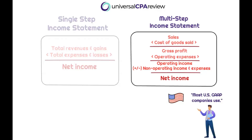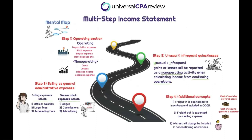The multi-step income statement is a little bit more robust and more broken out — there's more detail that financial statement readers want to know and see. If you're studying for the CPA exam, you might think revenues minus expenses is easy enough, and you're not wrong, but there are some sneaky things that could pop up and cost you dumb points. So we need to build ourselves a mental map.